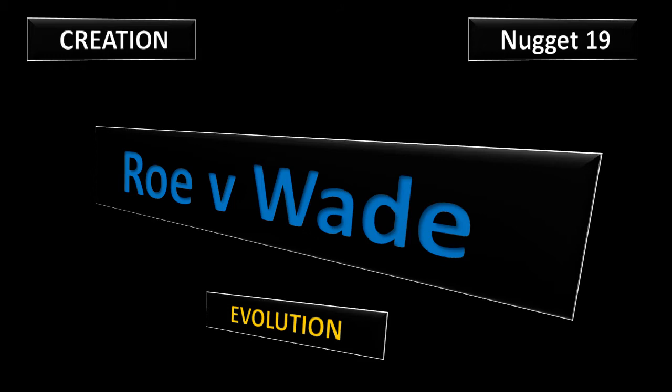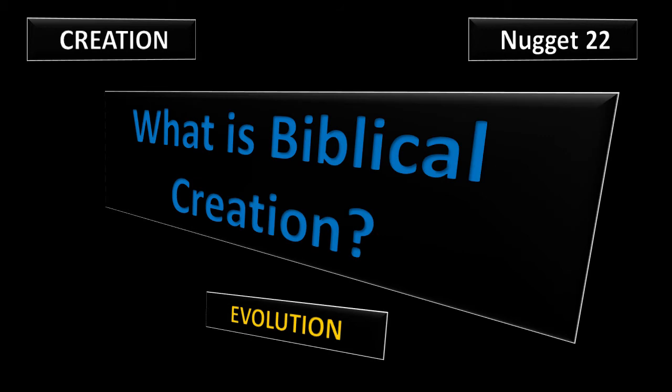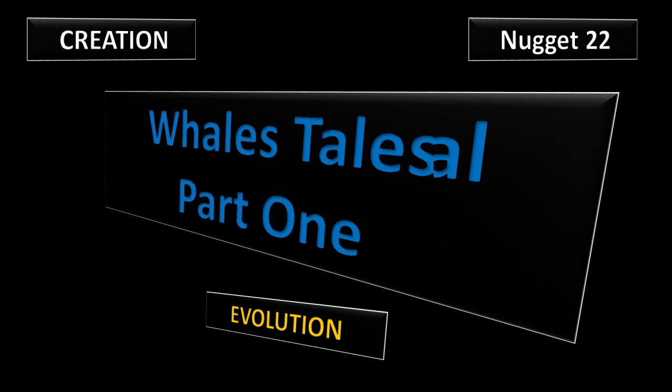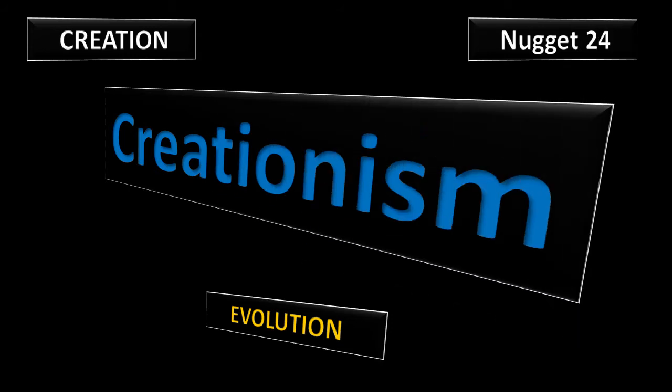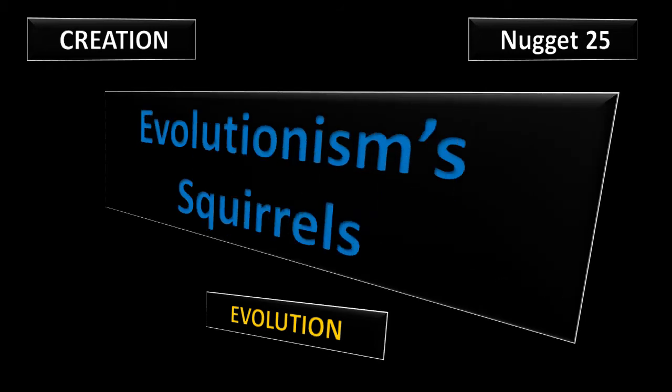Nugget 19: It's Roe v. Wade. Sort of an inside look at Jane Roe. Nugget 22: What is biblical creation? How do you define that? Nugget 23: A Whale's Tale, Part 1. How a young boy can influence your child. Nugget 24: Creationism. Is creationism our word or their word? Nugget 25: Evolutionism's Squirrels. There are two squirrels in the Grand Canyon and evolution loves them.